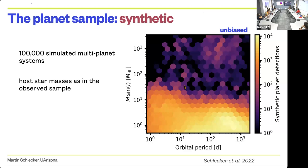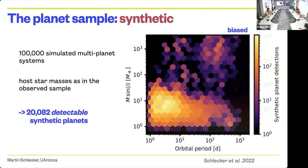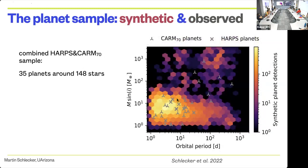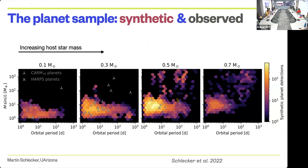Once we apply the detection bias of HARPS and CARMENES, a lot of these planets disappear—most of them in fact. We end up with about 20,000 planets we can look at, mostly super-Earths on short orbits. This is also where most of the observed planets reside—they cluster at orbits of tens of days and mostly super-Earth masses. Overall it looks like a relatively good match.